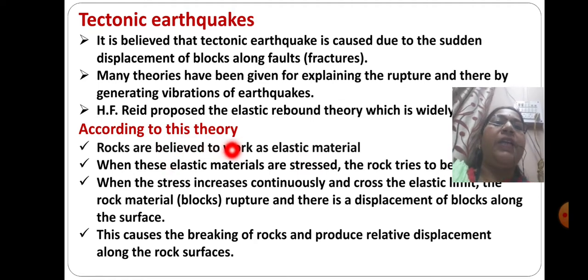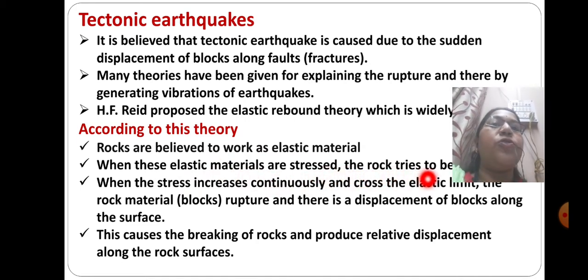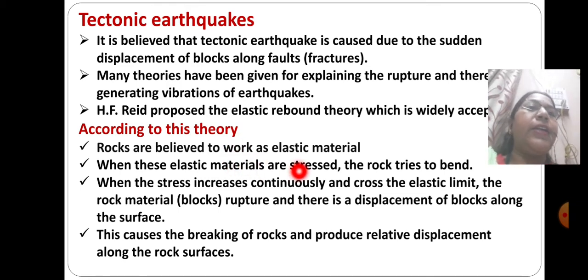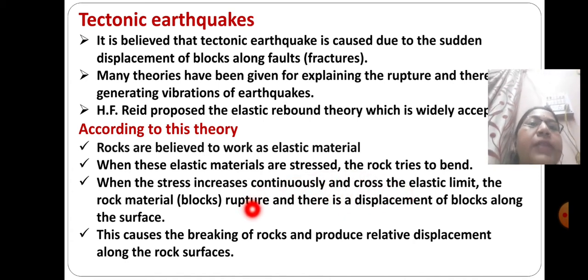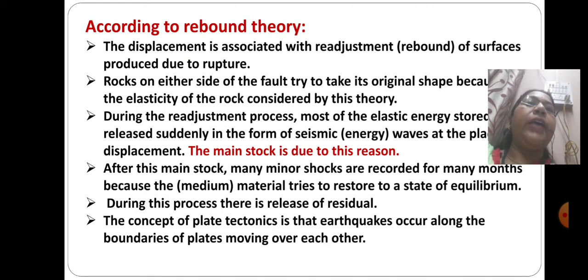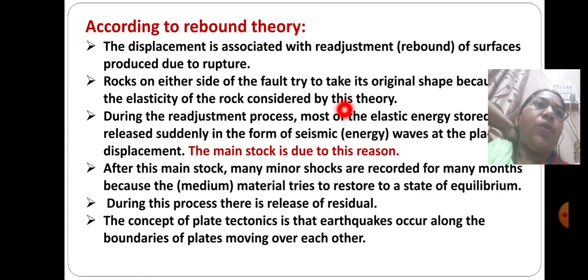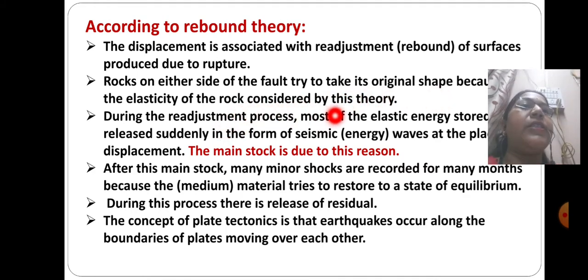According to rebound theory, rocks are believed to work as elastic material. When these elastic materials are stressed, the rock tries to bend. When stress is increased continuously and crosses the elastic limit, the rock material — that is the blocks of rock — ruptures, and there is displacement of blocks along the surface. This causes the breaking of rocks and produces relative displacement along the rock surfaces.